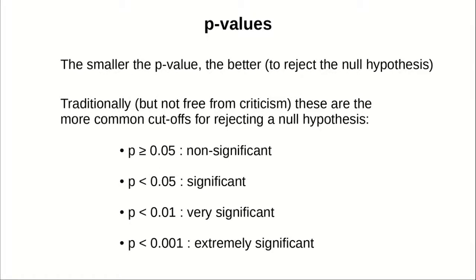Think about it. The smaller the p-value, the better to reject the null hypothesis. And traditionally, although there is a lot of criticism, as a rule of thumb, we use this threshold. If the p-value is greater than 0.05, we don't reject the null hypothesis. If it's smaller, we usually reject with different levels of confidence, as you can see in the slide here.